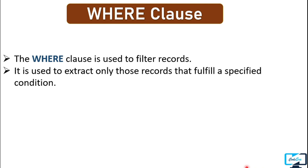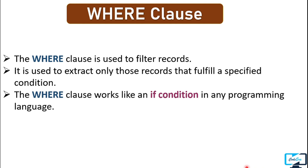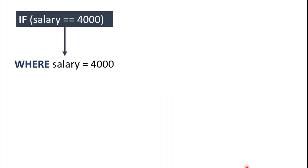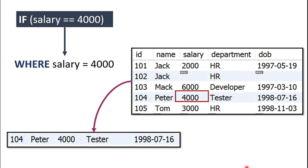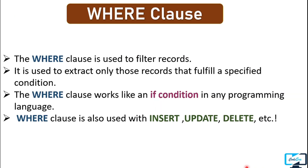The WHERE clause acts like an IF condition in any programming language. It compares the given condition with the column values in the table; if the condition is true, it returns the row. So the WHERE clause evaluates the condition as true or false. One more thing: WHERE clause is not only used with the SELECT command — it is also used with other commands like INSERT, UPDATE, DELETE, and so on. With the WHERE clause we have to use some operators.